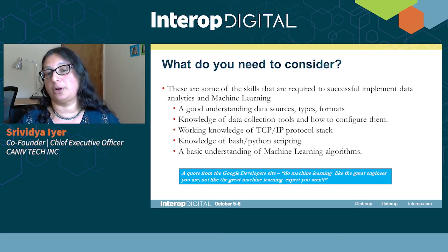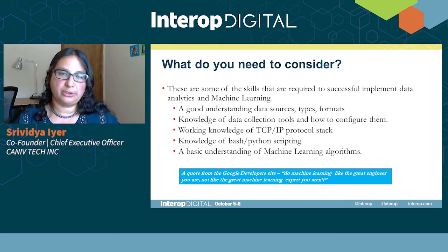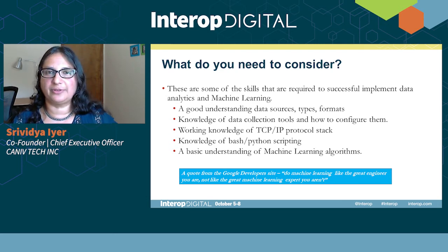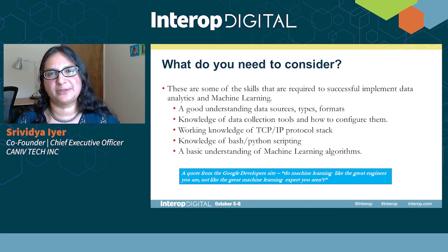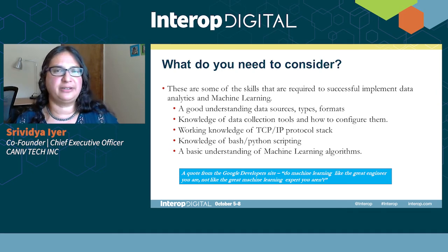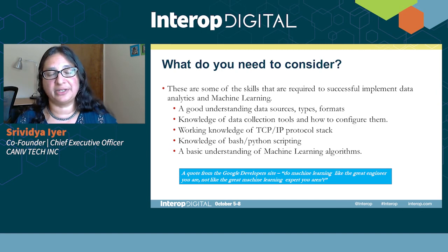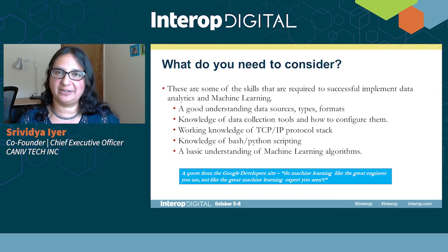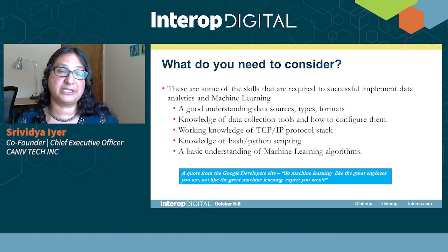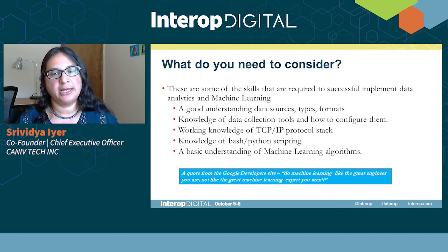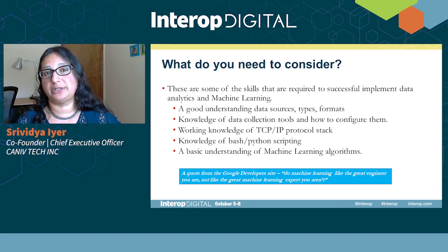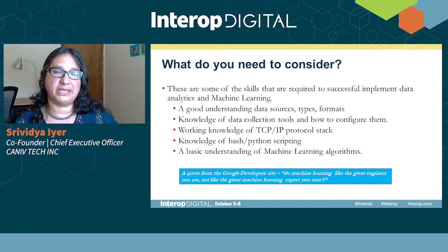Knowing what you're really looking for helps define your problem statement. Knowledge of bash and Python scripting is important — you don't actually need to be a full-fledged programmer. Network engineers I talk to say they don't want to be programmers, and you really don't need to be — you just need to know how to do scripting. Scripting is much more forgiving than application development. A basic understanding of machine learning algorithms is also needed — you just need to know what these algorithms do and how to call the methods in scikit-learn. You don't need to know the inner workings of how they work.